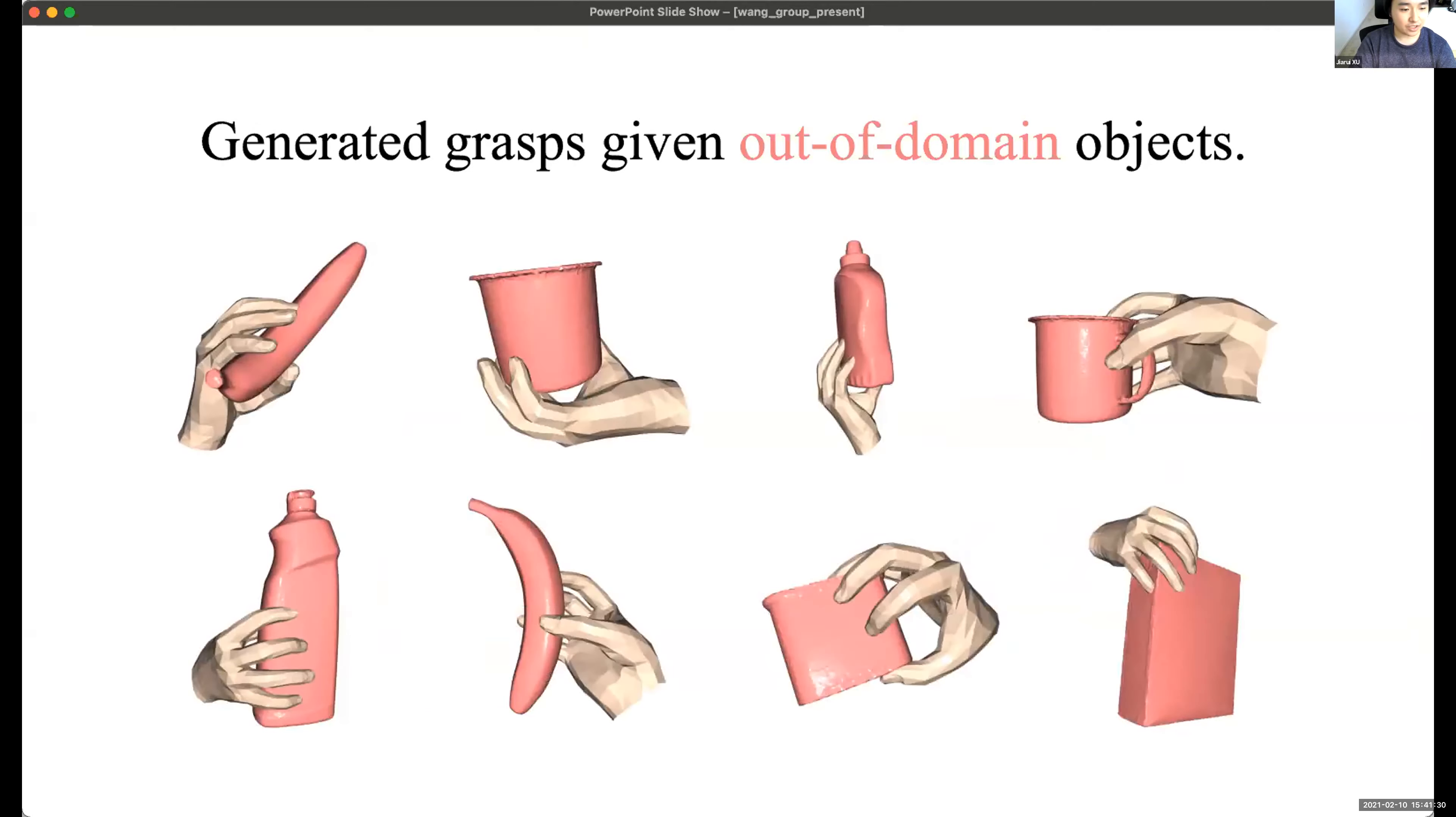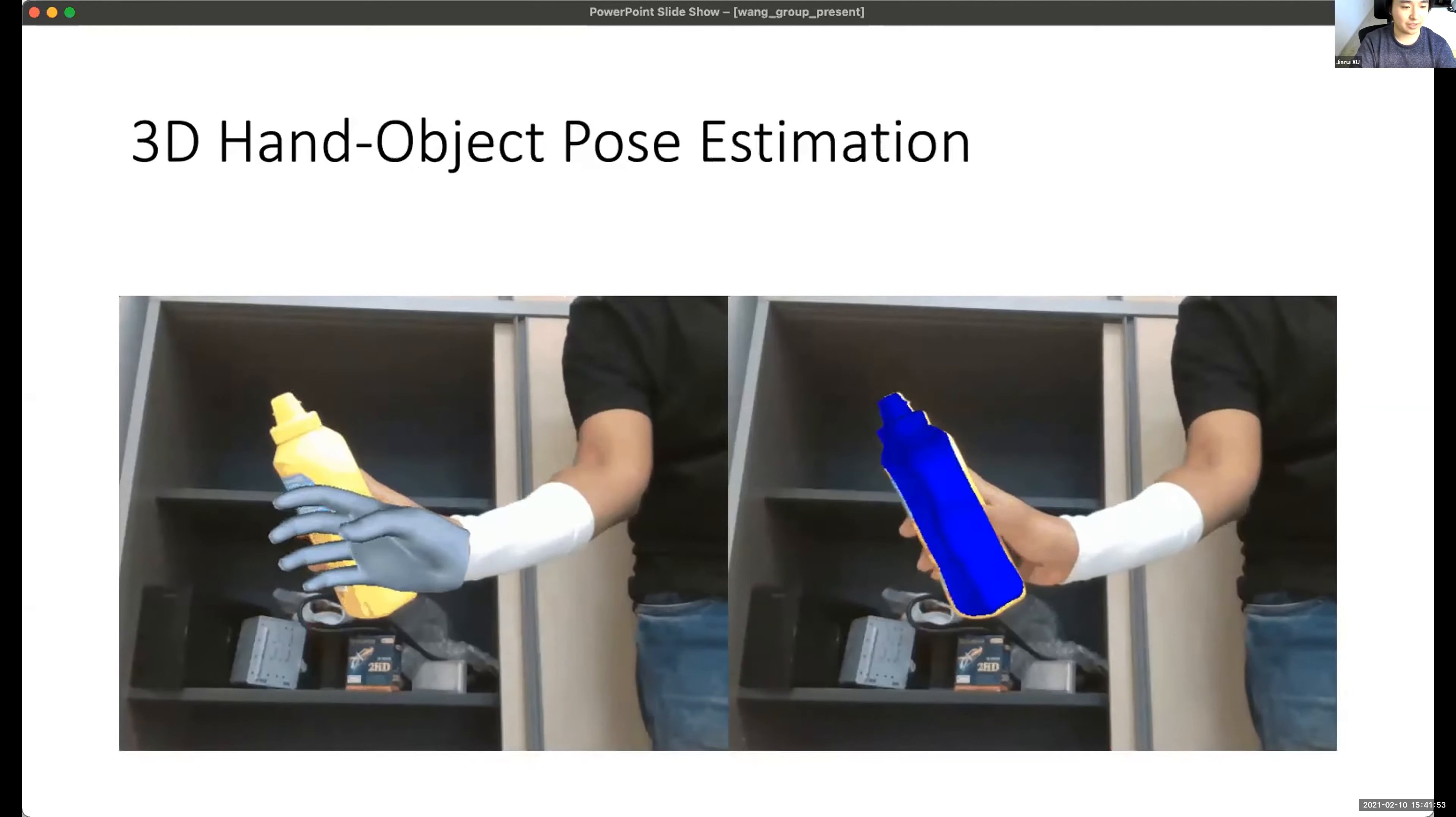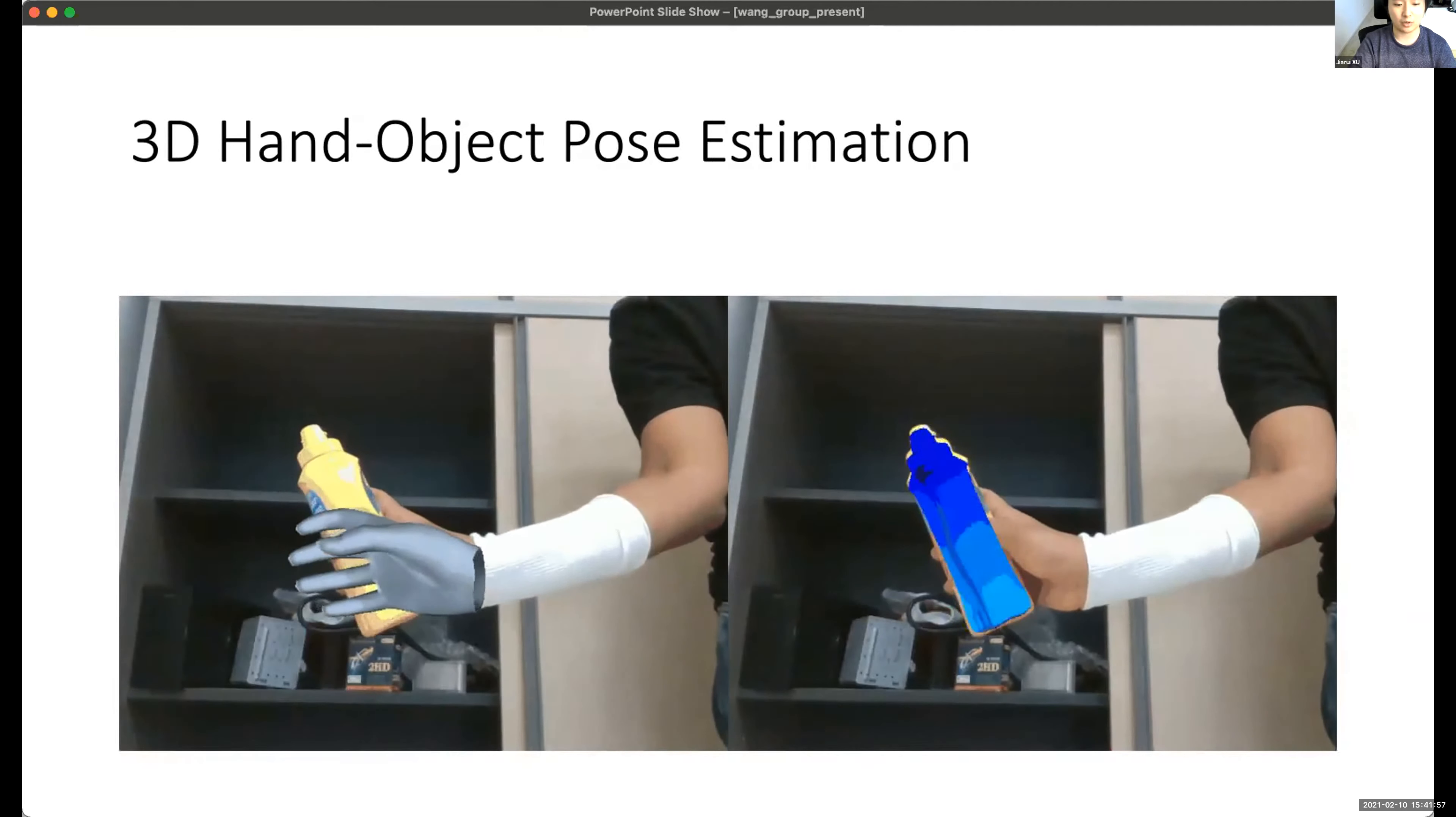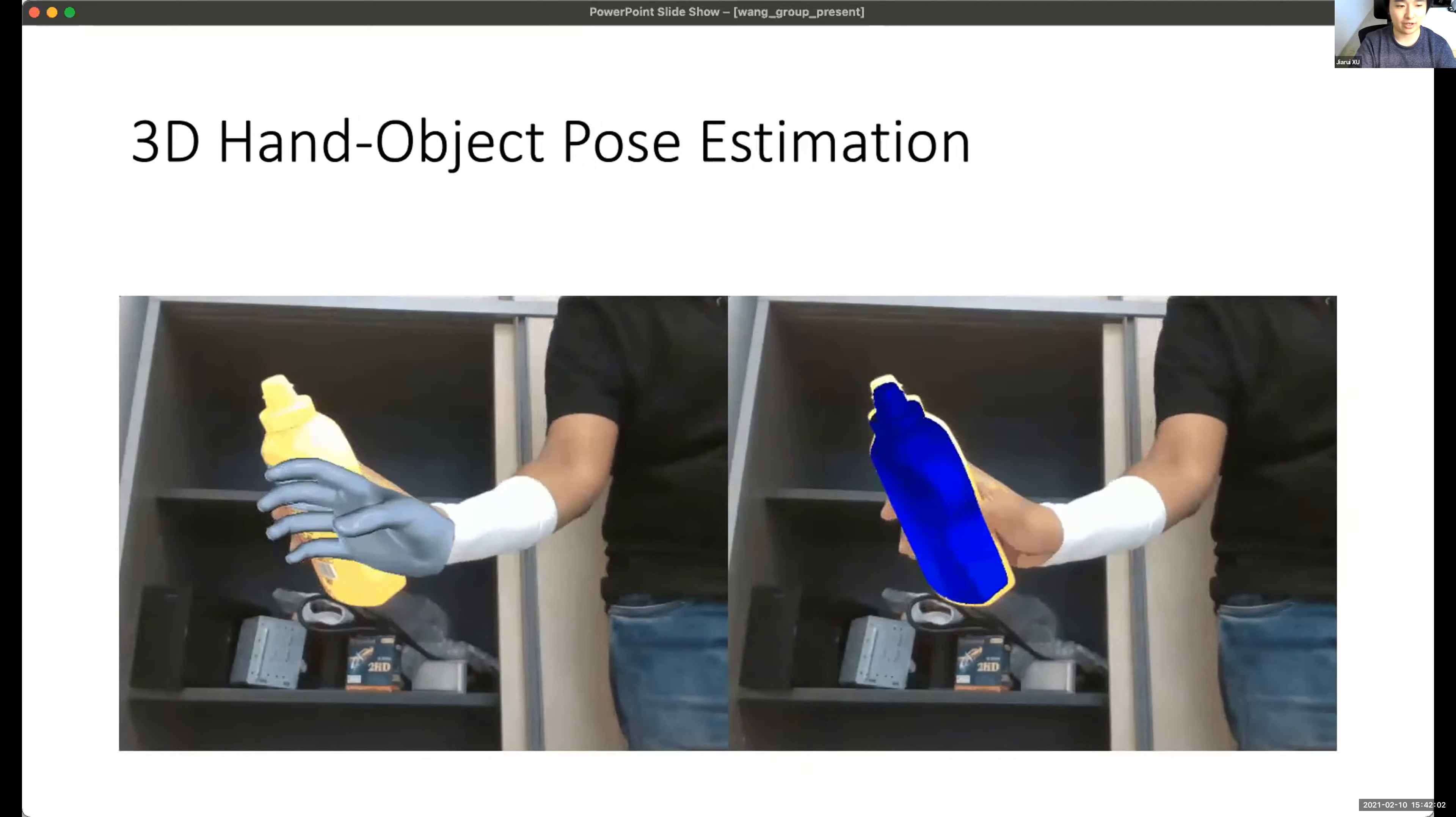And this is some more demos of out-of-domain objects. And besides the human hand pose generation, we can also predict the 3D bounding box or the pose of the object. We can estimate the 3D bounding box and the pose from the videos. And here is the live demonstration of both hand mesh and the object pose estimation. You can see that we can estimate the object pose and hand pose very accurately.